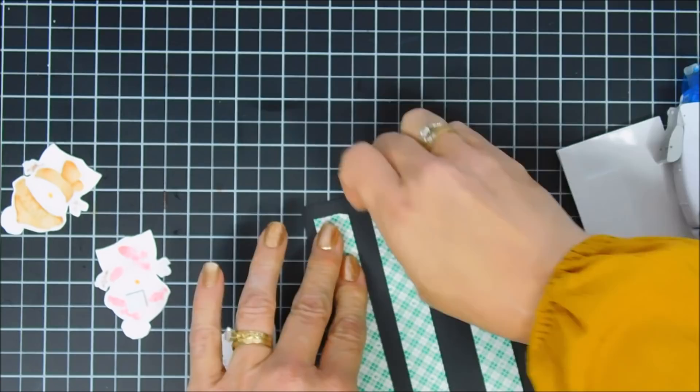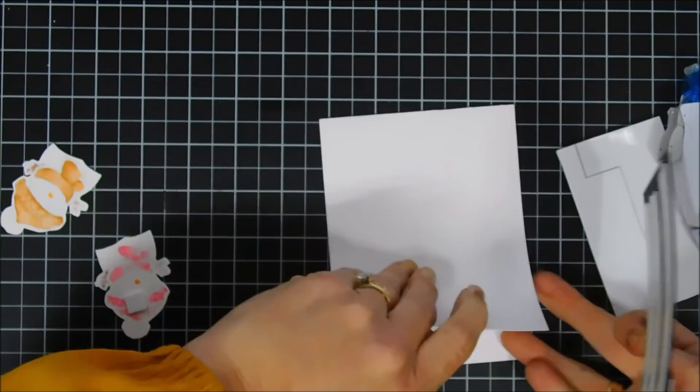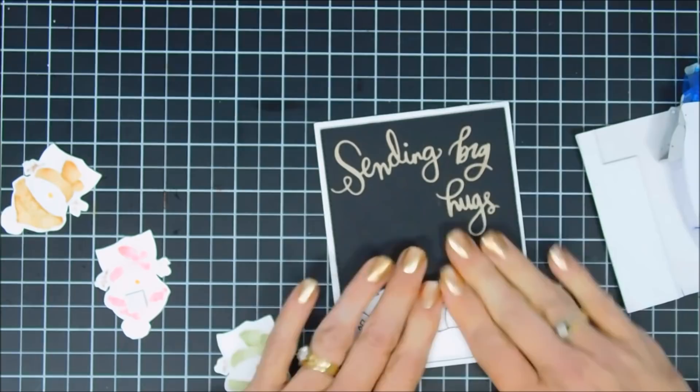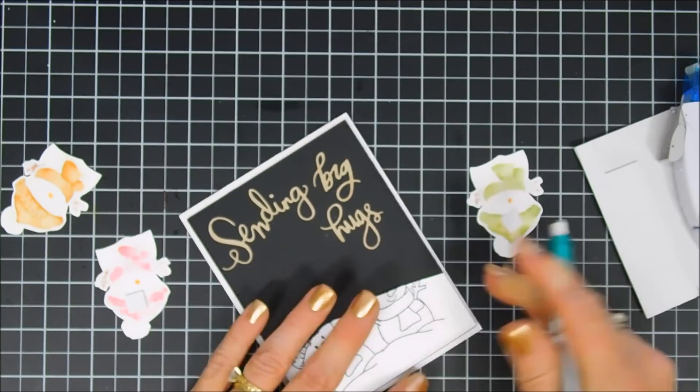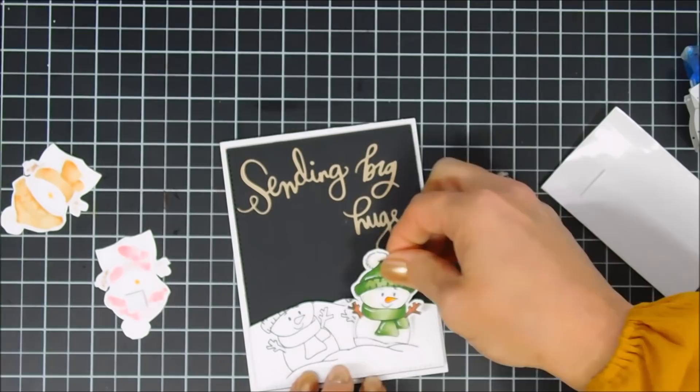I added my foam tape behind the panel and we're going to adhere that to an A2 size card base and you can see it leaves a little bit of a white border. It kind of looks funny but the stamped image, the snow banks, help when you stamp them with white it just made it flow really nice. I'm erasing my pencil marks and then we'll go ahead and add our snowman.